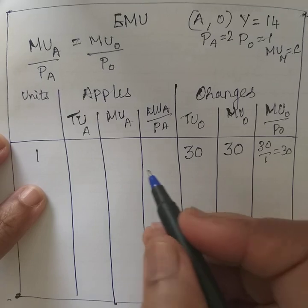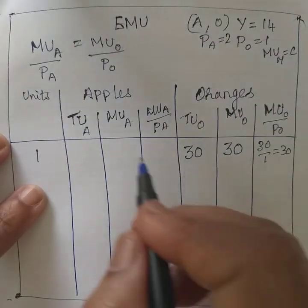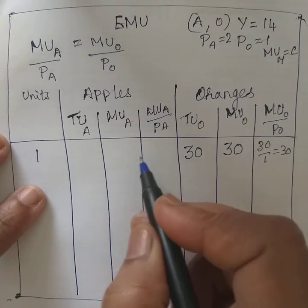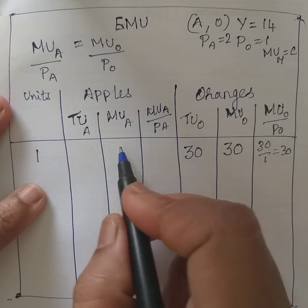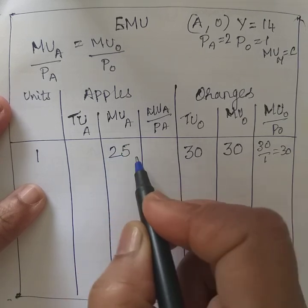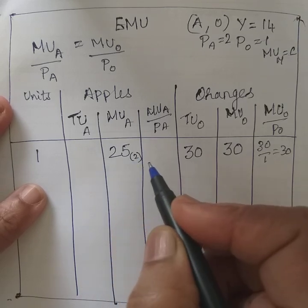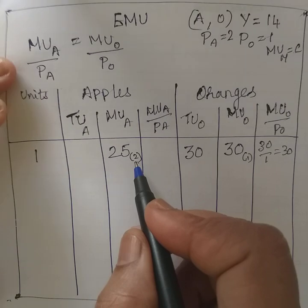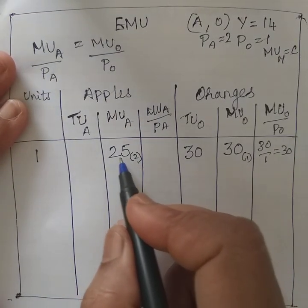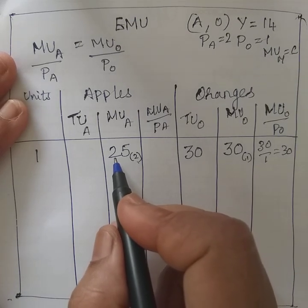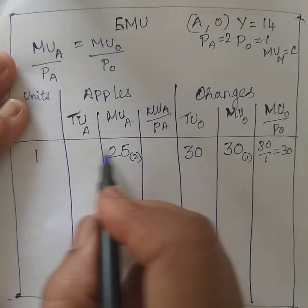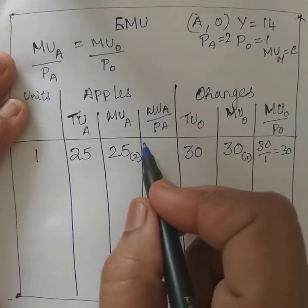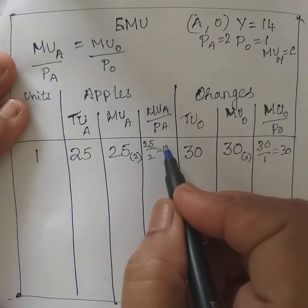The consumer may then switch to a different commodity. The first unit of apple gives 25 utils. Apple costs 2 rupees — the first rupee was spent on the orange, and the second and third rupees are spent on the apple, giving 25 utils. Since this is the first unit, total utility from apple is also 25. MUA/PA = 25 ÷ 2 = 12.5.